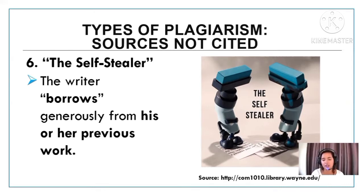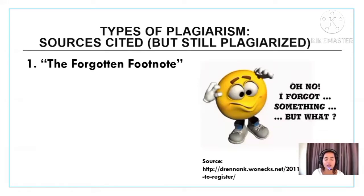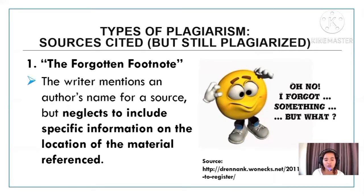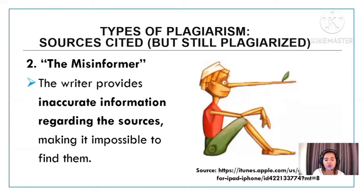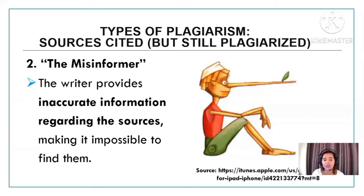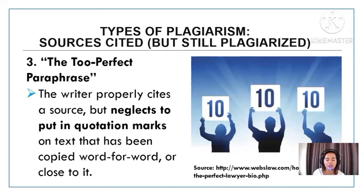Now for sources that are cited but still plagiarized: the forgotten footnote is when the writer mentions an author's name but neglects to include specific information on the location of the material referenced. The misinformer gives inaccurate information about sources — for example, changing a page number from 56 to 25, or changing a temperature or a program name — making it impossible to find the source. That's still plagiarism.